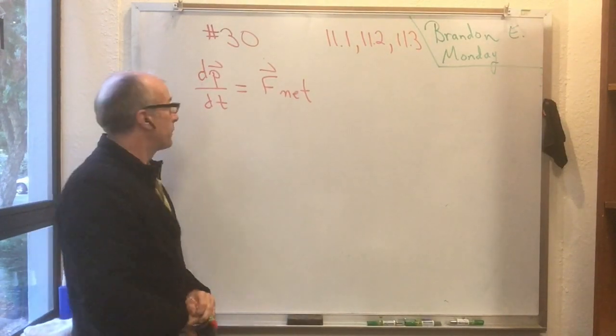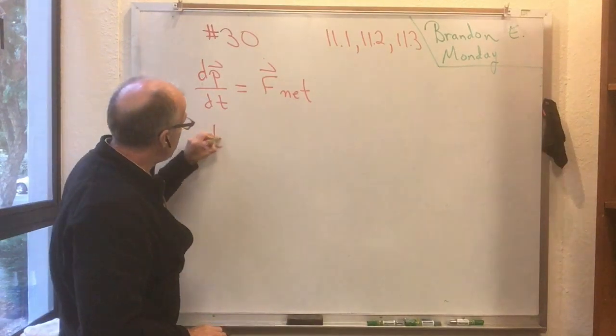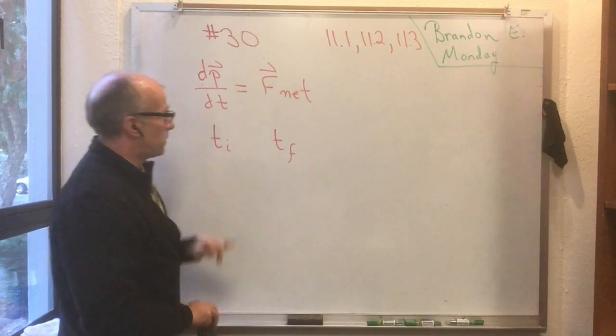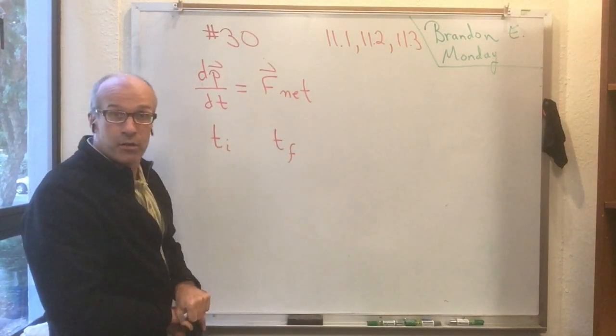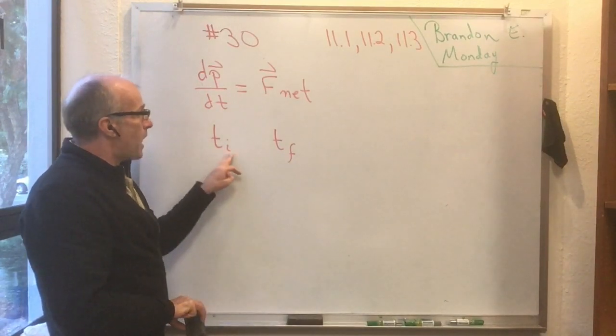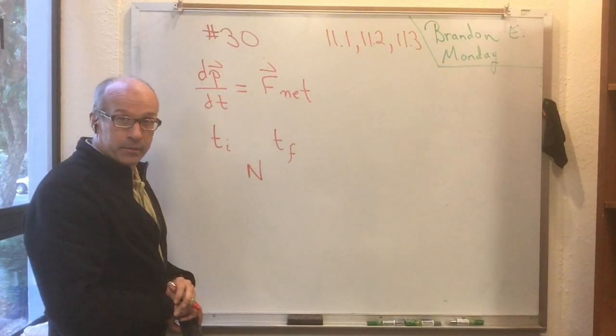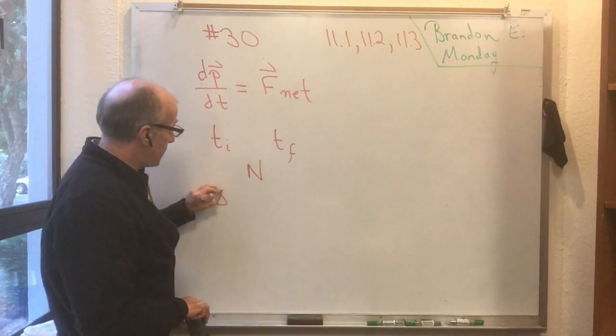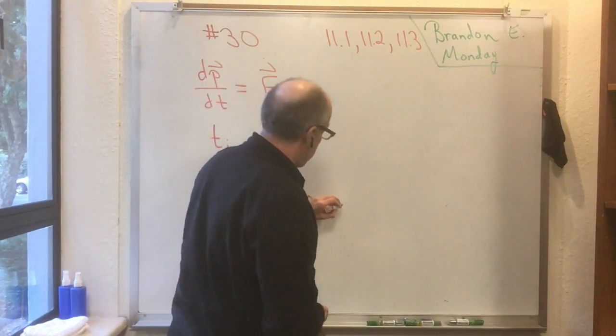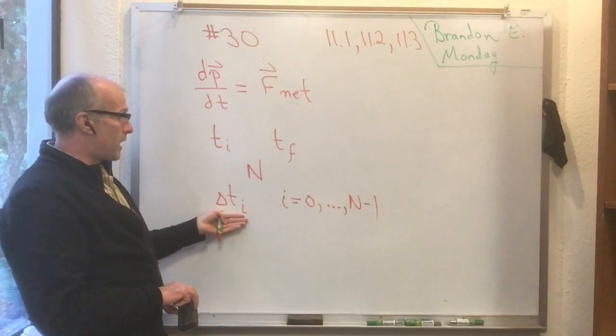You can imagine you're watching this system from a time t_initial to another time t_final. And F_net might be changing over that time. So let's chop this time up into a whole lot, capital N, of little times, delta t sub i, where i goes from 0 to n minus 1.